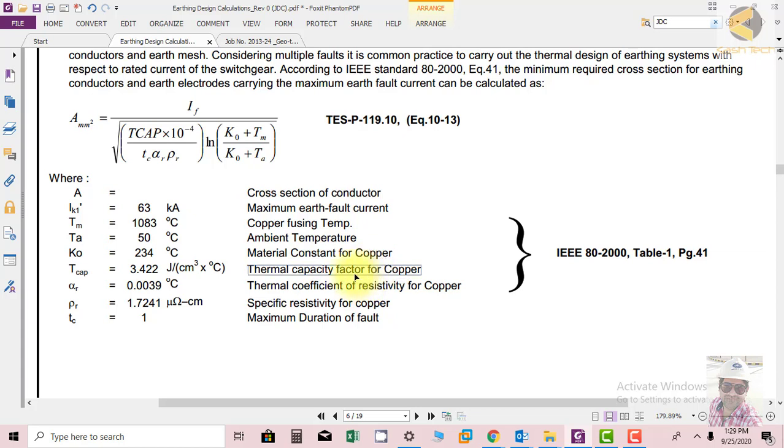In short, if you want to increase one degree centigrade in one cubic centimeter of copper, you will need 3.422 joules of energy to heat it up. This is the energy required.